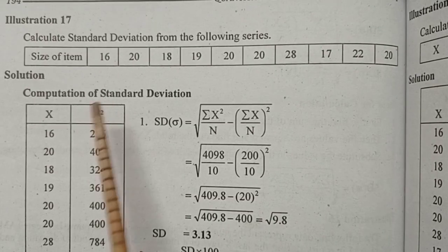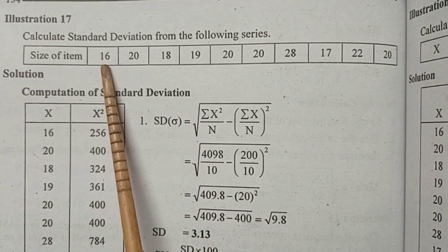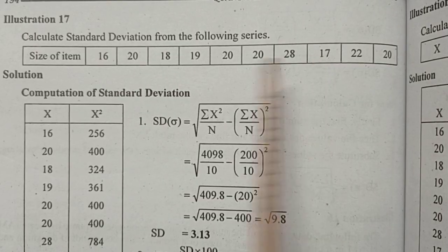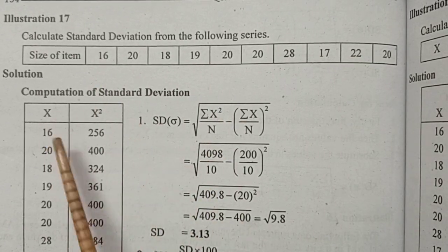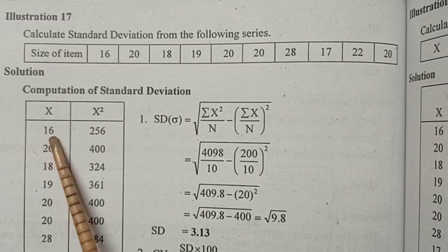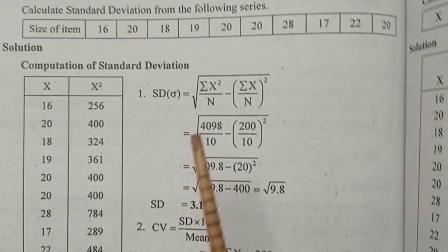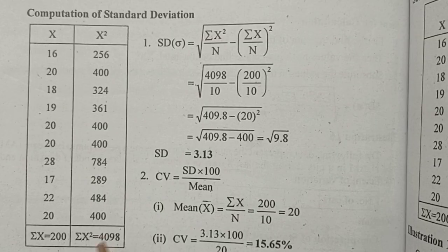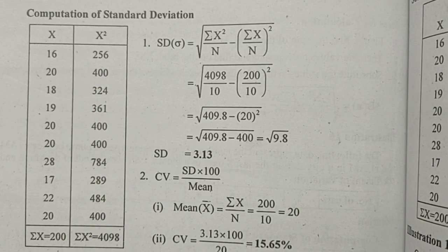Next example: for large numbers in individual series, we use a different approach. When the data values such as 16, 20, 18 are large numbers, we use the standard deviation formula suited for large numbers in an individual series.